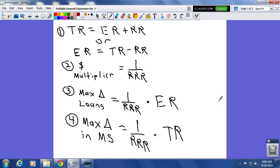And then, for equation number three, we have our max change in loans. So, our max change in loans is equal to our money multiplier, one over the reserve requirement ratio, times excess reserves. Okay, so if you want to find your max change in loans in the banking system, use that equation.